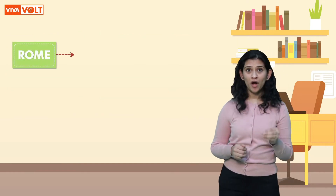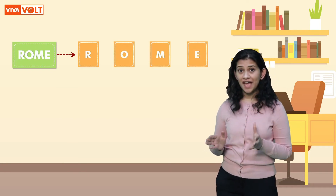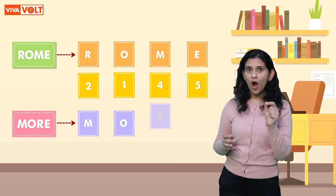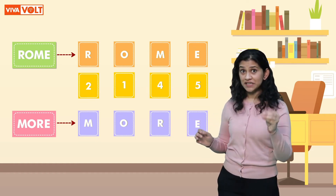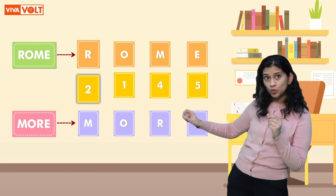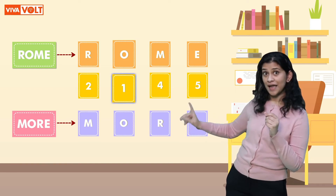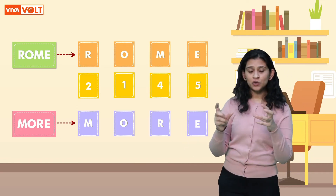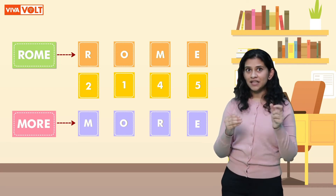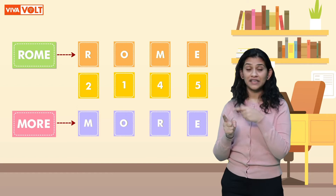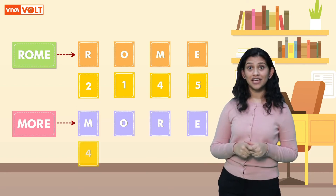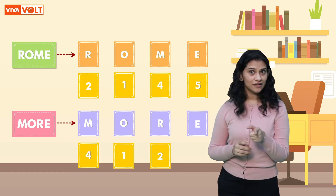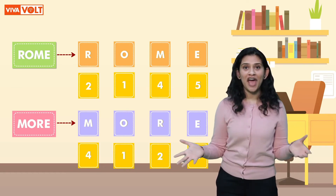Now you tell me: if ROME is coded as 2, 1, 4, 5, then how will MORE be coded? If you see here, R is being denoted by 2, O is being denoted by 1, M is for 4, and E is 5. Now using these numbers denoted for each of these letters, how will we write MORE? M is denoted as 4, O by 1, R by 2, and E by 5. So MORE is properly decoded as 4, 1, 2, 5.